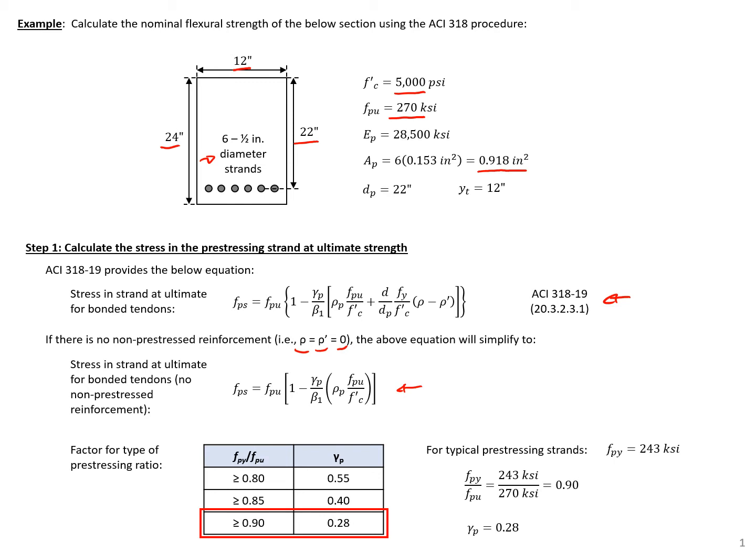We need to determine our factors. The first is gamma sub p, which accounts for the type of prestressing we have. Typical prestress reinforcement has a yield strength approximately equal to 90% of the ultimate strength.